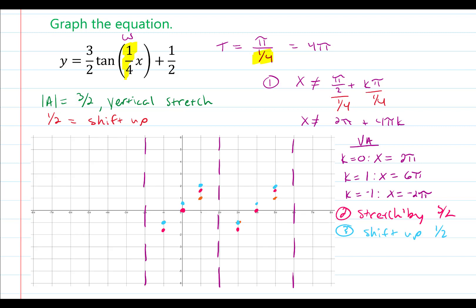I'm now able to connect this with a smooth curve. You'll notice these curves for the tangent function do look like the cubic function, so you can connect them in a similar pattern. They do follow along the vertical asymptotes — it's very important that they never cross or touch the vertical asymptotes. And there you go. Good luck.